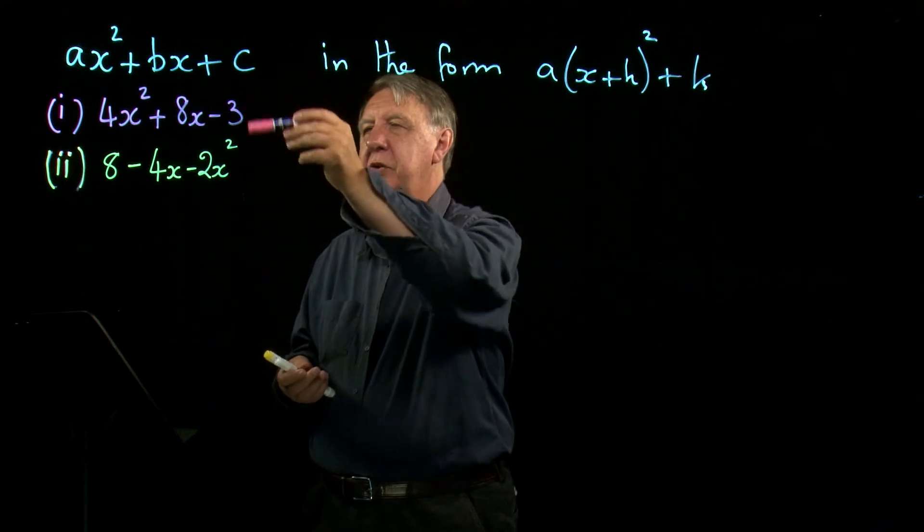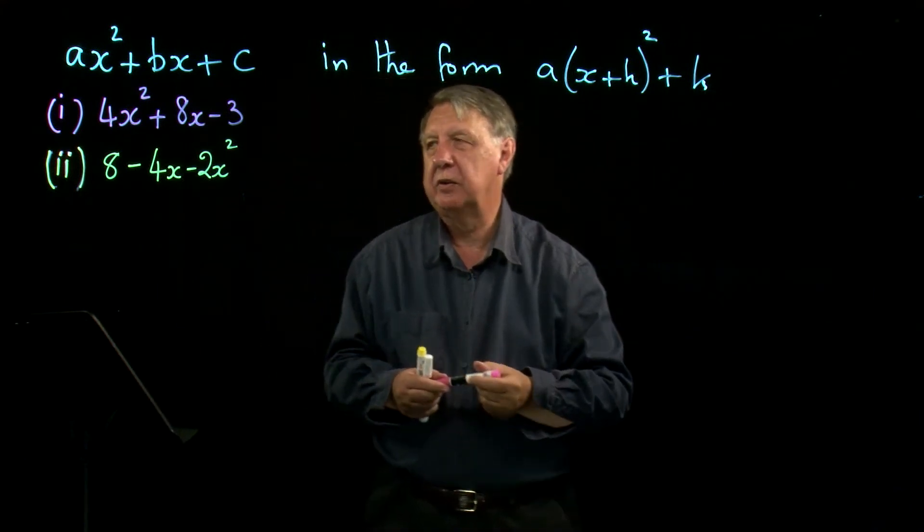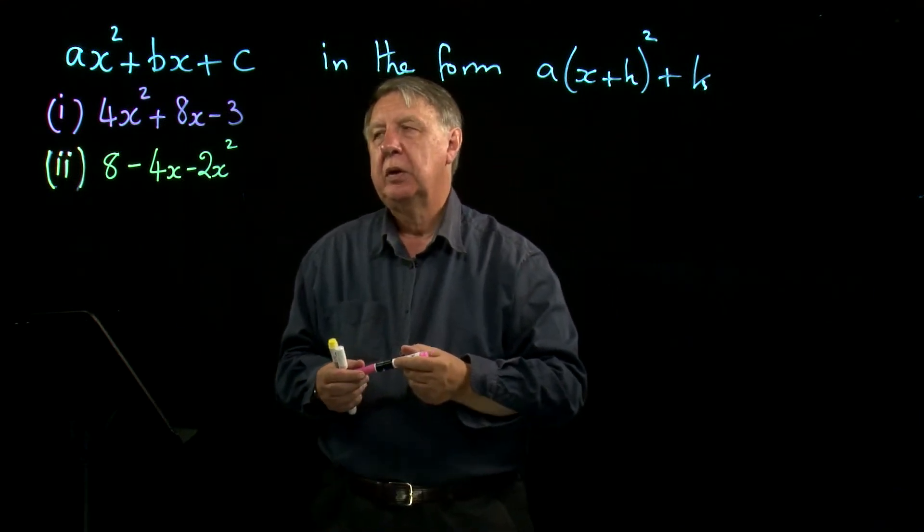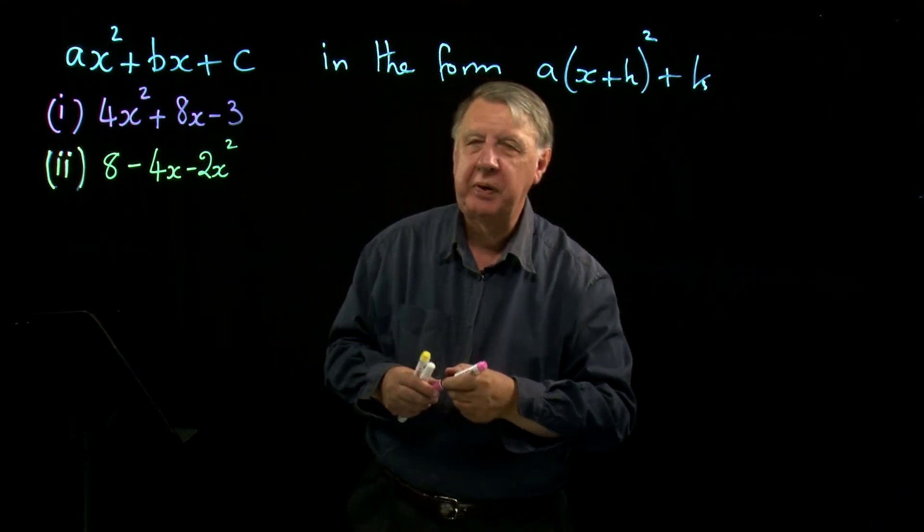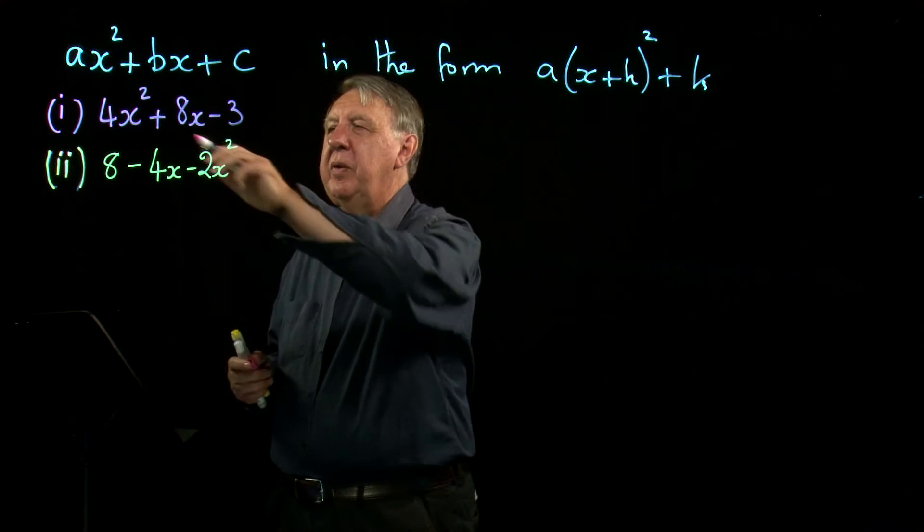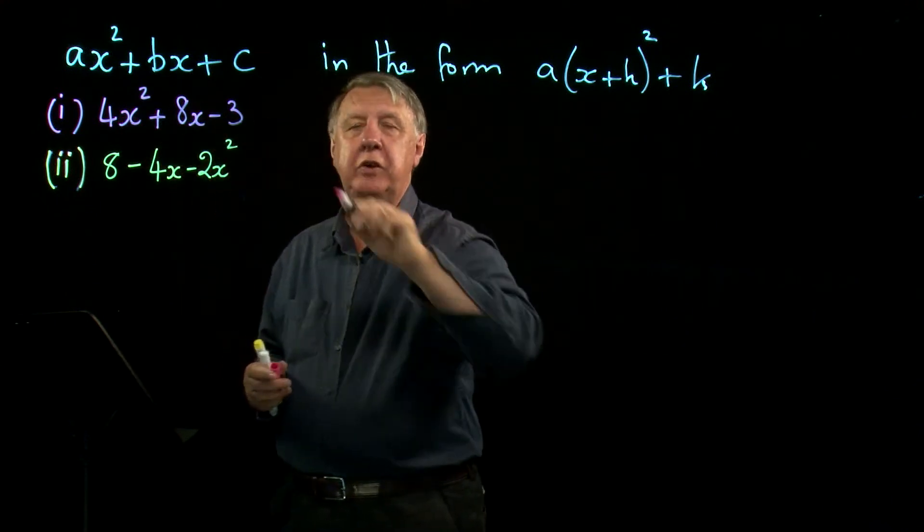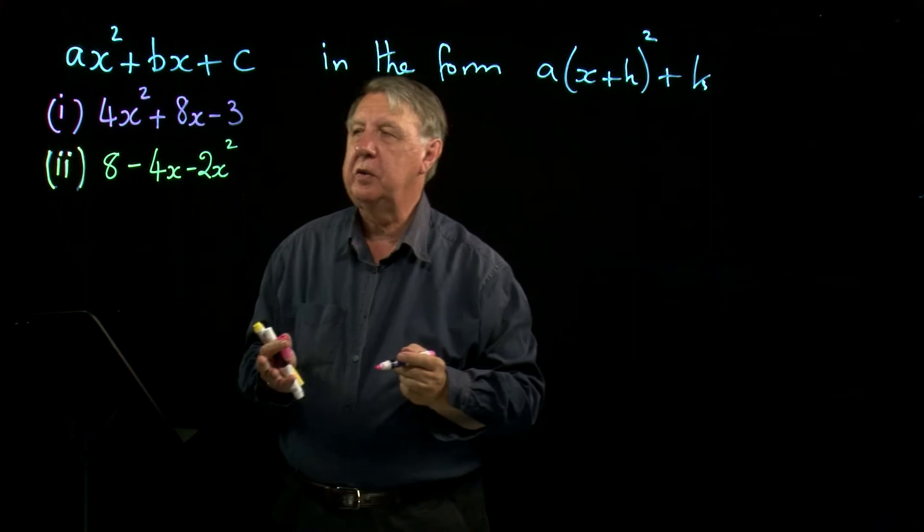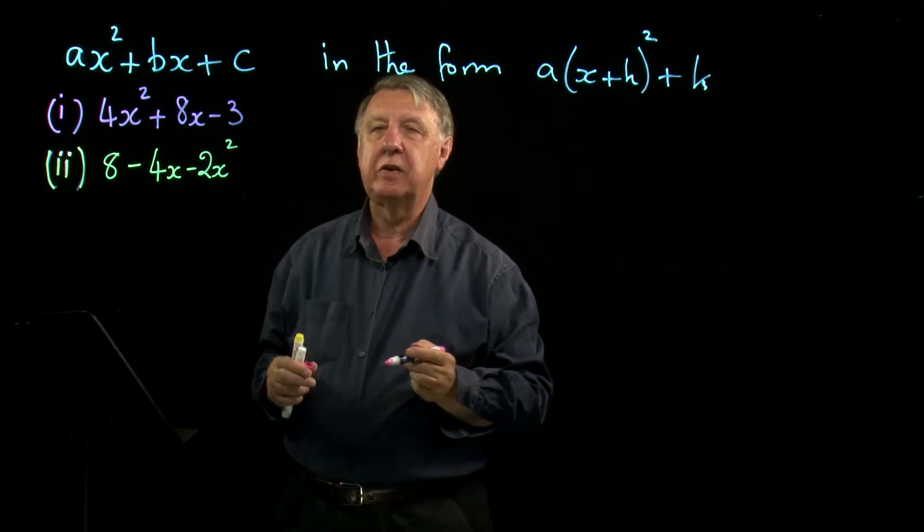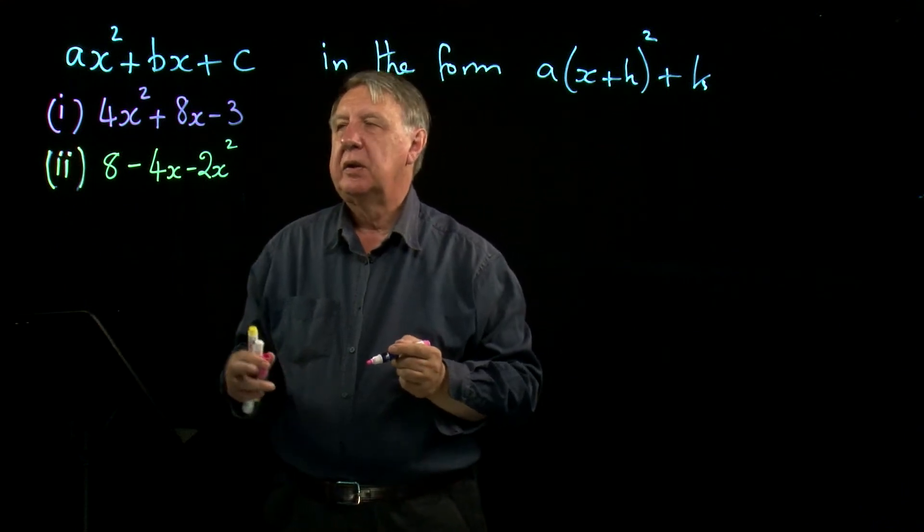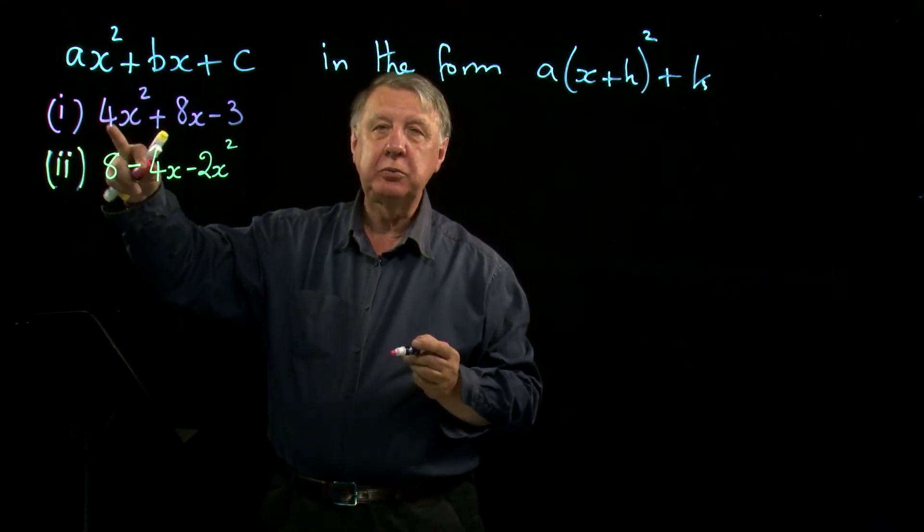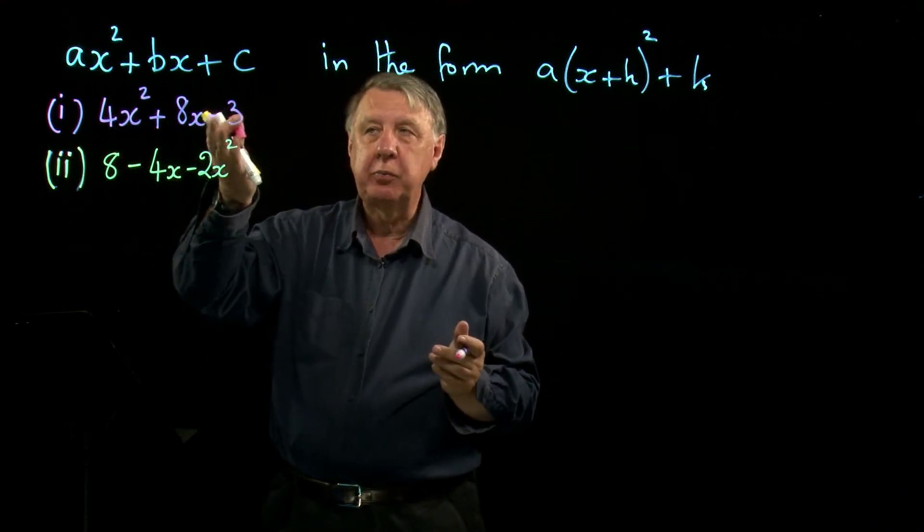We'll look at two different examples here which have their own problems. We'll start off with the first one - we'll call this my pink example. The method you've learned so far assumes that this number is one, the coefficient of x squared. It's four at the moment, so I'll just divide everything by four.